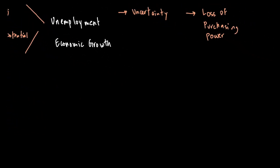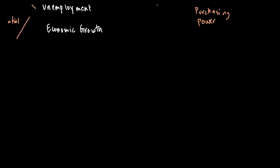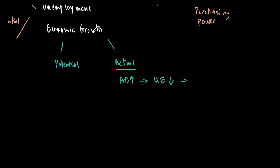When it comes to economic growth, we are looking at two kinds: potential growth and actual growth. Actual growth is the idea of increasing aggregate demand. When aggregate demand goes up, unemployment will go down and the GDP of an economy will go up, bringing us closer towards the PPC. So actual growth is when aggregate demand rises, causing GDP to rise and unemployment to go down.